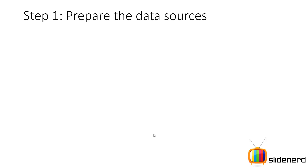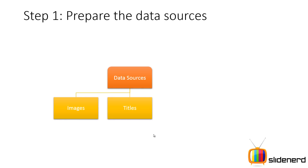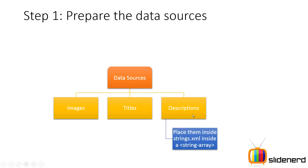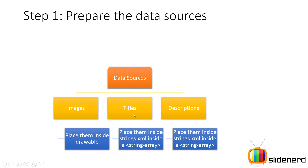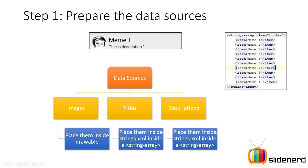Step one: prepare the data sources. You need images, titles — which are strings — and descriptions. You can have descriptions inside your strings.xml in a string array. Images go inside the drawable folder in your res directory. Titles can also be in a string array. Inside strings.xml you create a string array, give it a name, put the text items inside it, and use them in your app.